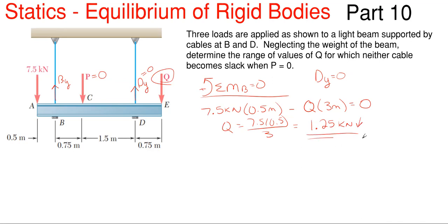All right, so there's one of my extents, one of my range values. So whenever Q is 1.25 kilonewtons, this cable for D is no longer in tension. It is absolutely 0 at this point. It is balancing out with point B over here.